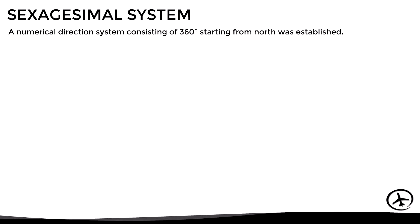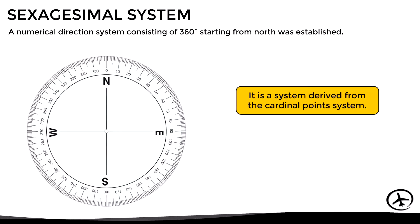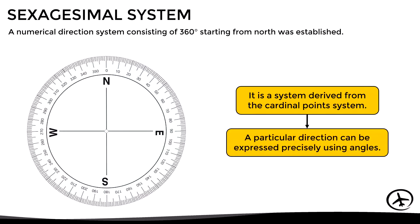That's why a numerical direction system consisting of 360 degrees starting from north, known as the sexagesimal system, was established. This is a system derived from the cardinal points system. The difference is that here a particular direction can be expressed precisely using angles relative to north. In this order of ideas, north would be represented by 0 degrees, east by 90 degrees, south by 180 degrees, and west by 270 degrees. Now that we know how direction is expressed on earth, let's look at the definition of course.